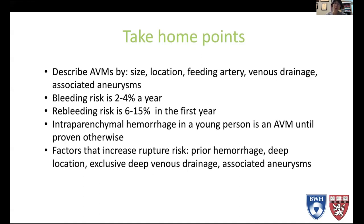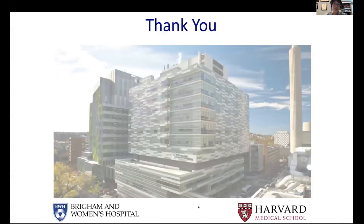To wrap up with take-home points: when you see an AVM, describe the size, location, feeding arteries, venous drainage, and whether there are associated aneurysms. The bleeding risk of an AVM is about two to four percent a year, and the re-bleeding risk is about six to fifteen percent in the first year after hemorrhage. Intraparenchymal hemorrhage in a young person is an AVM until proven otherwise. Factors that increase rupture risk include prior hemorrhage, deep location, exclusive deep venous drainage, and associated aneurysms. That concludes my talk. Thank you.